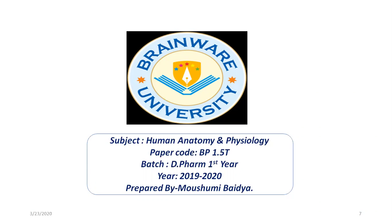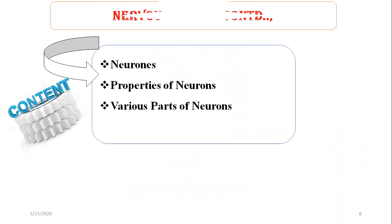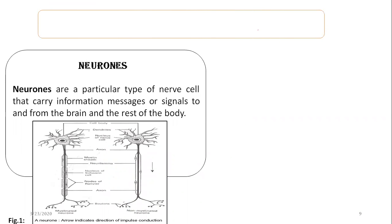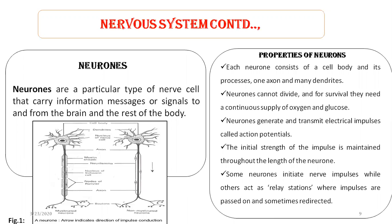Good afternoon all of you. In this video, I want to discuss about the neurons. Neurons are a particular type of nerve cell that carry information, messages or signals to and from the brain and the rest of the body.